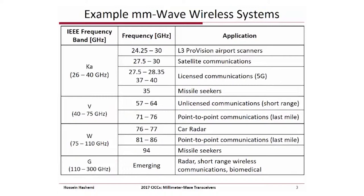There are many envisioned or already deployed commercial millimeter wave wireless systems. Some of them are listed in this slide, separated by the IEEE designation of frequency band from KA to VW and G, roughly 30 GHz to 300 GHz. Applications vary from imaging and sensing — such as airport scanners used commercially, missile seekers used in military, and car radar — to wireless communications such as unlicensed and licensed communications. We're all familiar with unlicensed communications in the 60 GHz range, and also the newly released licensed communication bands by the FCC around 27 and 37 GHz for the upcoming 5G wireless standards. At frequencies above 110 GHz or in the G band, there are envisioned applications still at the research stage for radar, short-range wireless communications, as well as biomedical systems.